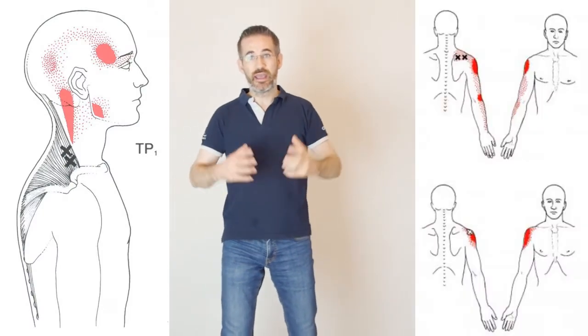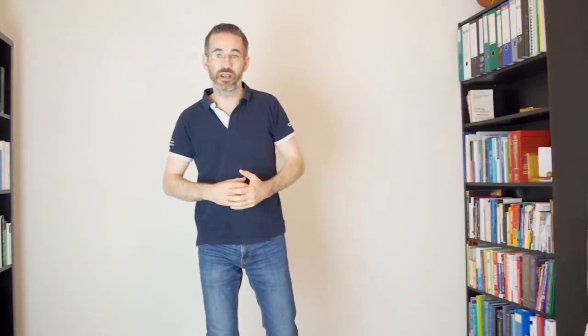Why is it a problem? There are three reasons. Problem number one is that it shortens your upper trapezius and your supraspinatus muscle, and this sustained muscle contraction will become painful.